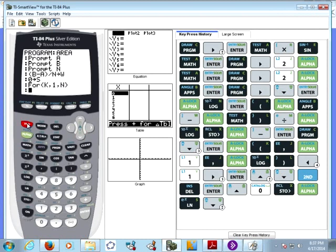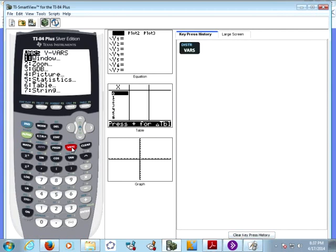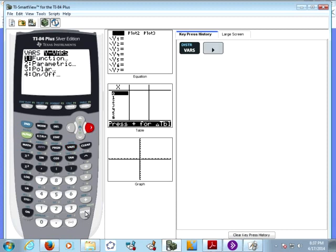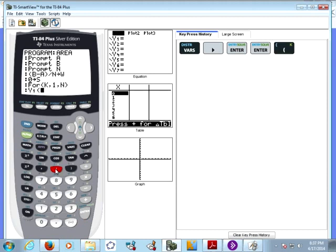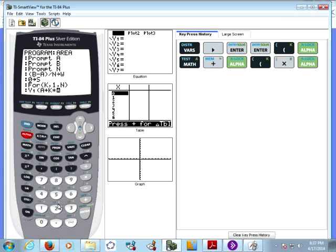So for each rectangle, what I want to do is take whatever function I stick into Y1. So to do that, I pick variables, Y variables, I pick the function Y1, and I want to evaluate that. So Y1 of A, alpha, there's the letter A, plus alpha K times W. Because the right-hand endpoint of rectangle K was the left-hand endpoint of the interval plus K times K copies of the width.